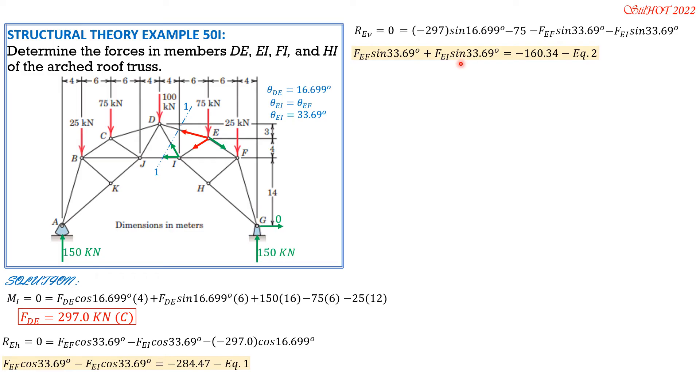Solving Equations One and Two by elimination, substitution, determinant, Cramer's rule, or any available method, we have FEF equals negative 315.47 kilonewtons, so it is compression. But that's not required. We need FEI. FEI is equal to 26.42 kilonewtons, so positive, so it is tension.